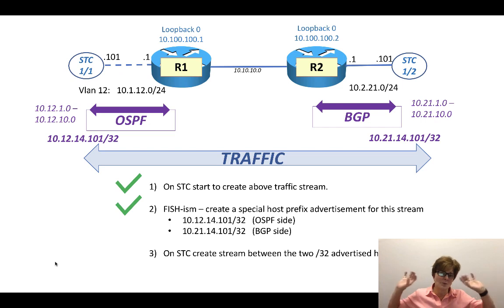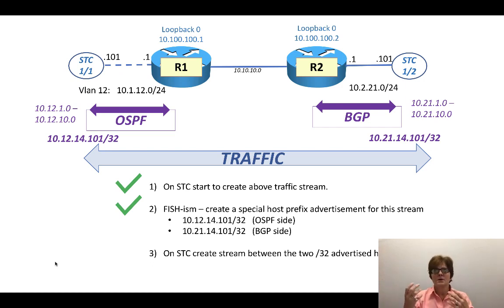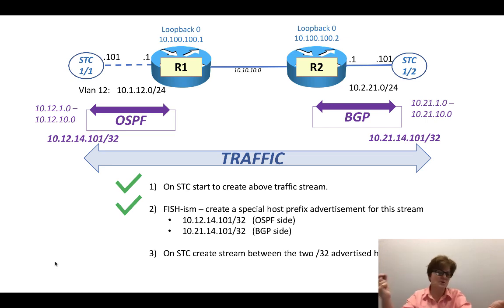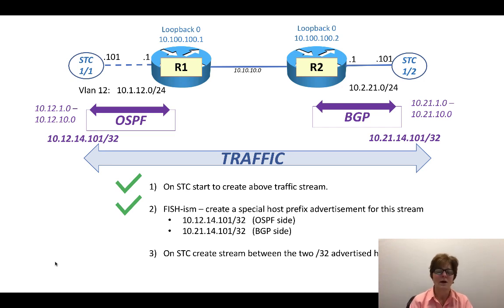With this approach I can do whatever I want with the other prefixes as background, use the command sequencer to withdraw them, inject them back. Sometimes people start with 10 prefixes each and then the customer wants 5,000. With Spirent these are called bounded stream blocks — when you set a whole bunch of OSPF prefixes talking to a whole bunch of BGP prefixes and you have ECMP, trying to measure timing becomes complicated. So focus on the test.